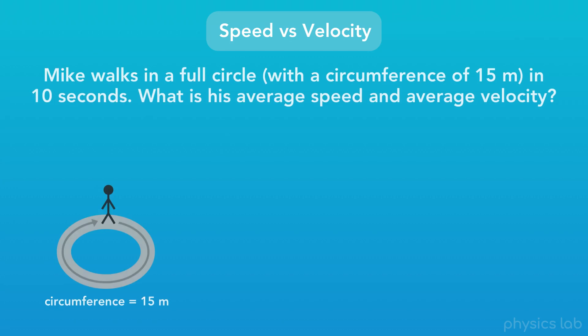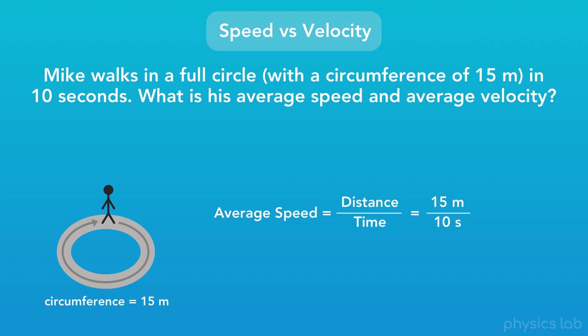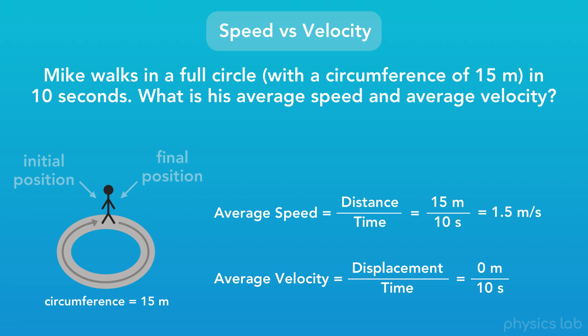Next, we can use the same examples to compare speed and velocity. Mike walks in a full circle with a circumference of 15 meters, and it takes him 10 seconds. What is his average speed and his average velocity? Well, speed is equal to distance over time. His distance traveled is 15 meters and it takes him 10 seconds, so his average speed is 15 divided by 10, or 1.5 meters per second. But velocity uses displacement, not distance. His displacement is 0 meters, so Mike's average velocity is 0 meters divided by 10 seconds, or 0 meters per second.